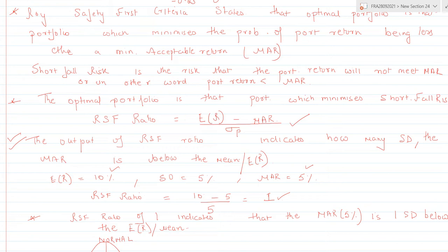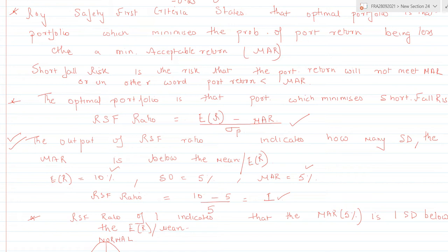The RSF ratio is calculated as: expected return of the portfolio minus the minimum acceptable return (MAR), divided by the standard deviation of the portfolio. An important point: the output of the RSF ratio indicates how many standard deviations the MAR is below the expected return of the portfolio.